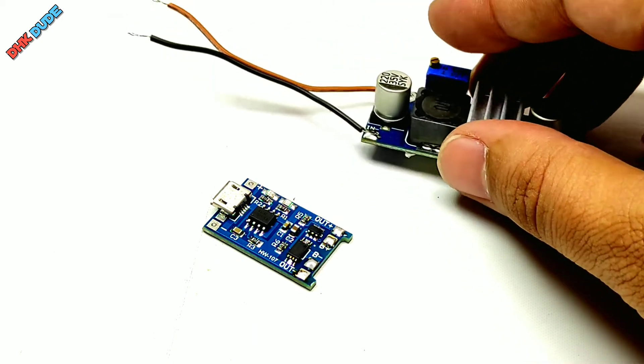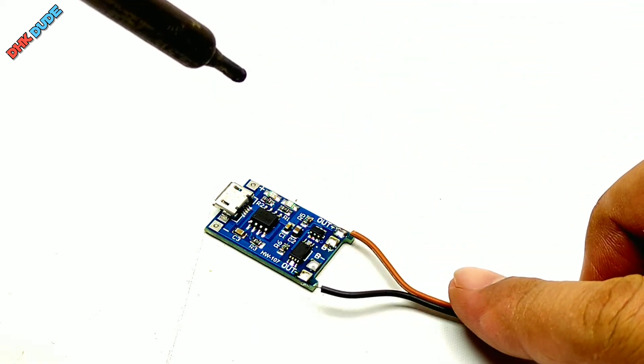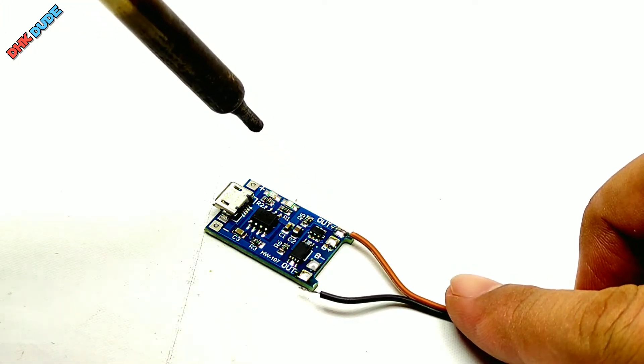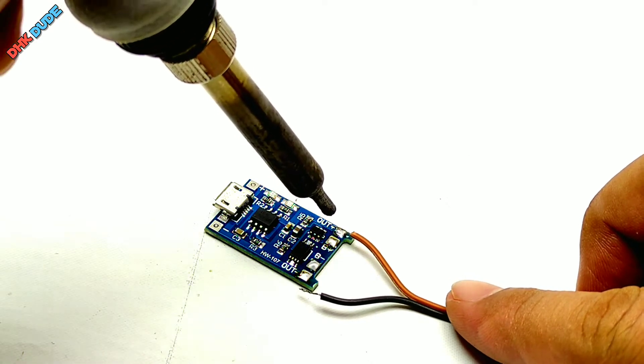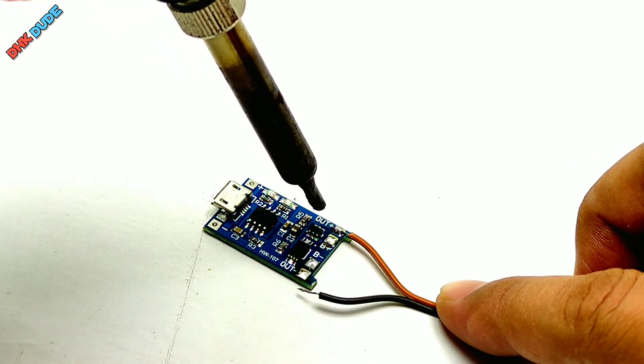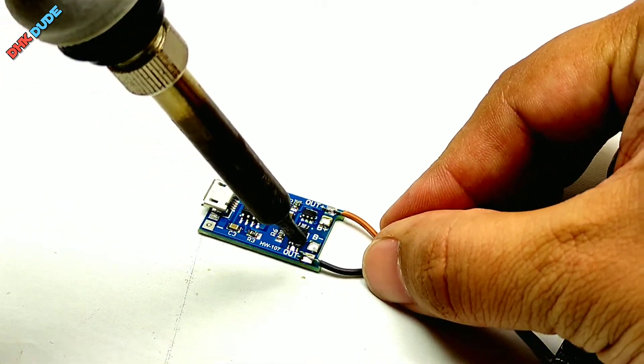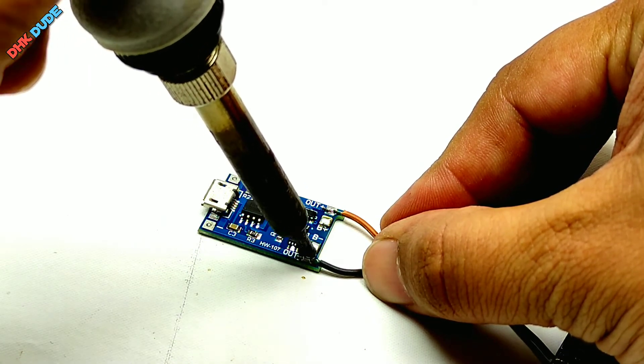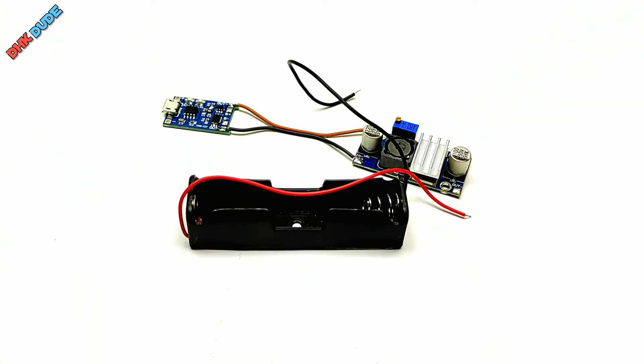Now the other ends of brown and black wire will be soldered to the TP4056 module. Solder brown wire on the OUT+ pad and black on the OUT- pad of the module. In short, OUT+ pad of the TP4056 module will be connected to IN+ pad of the XL6009 module and OUT- pad of TP4056 will be connected to IN- pad of the XL6009 module.